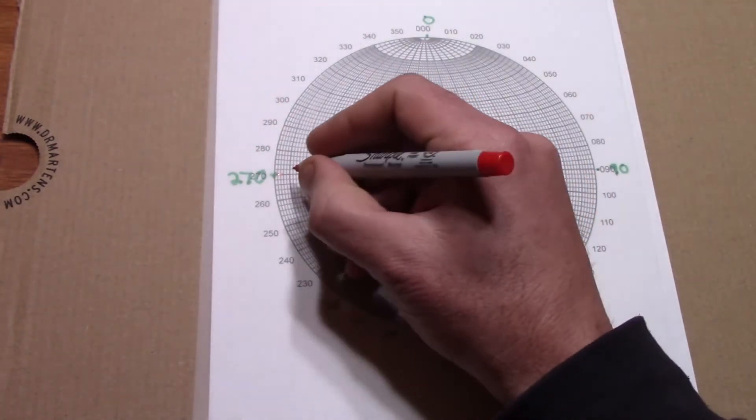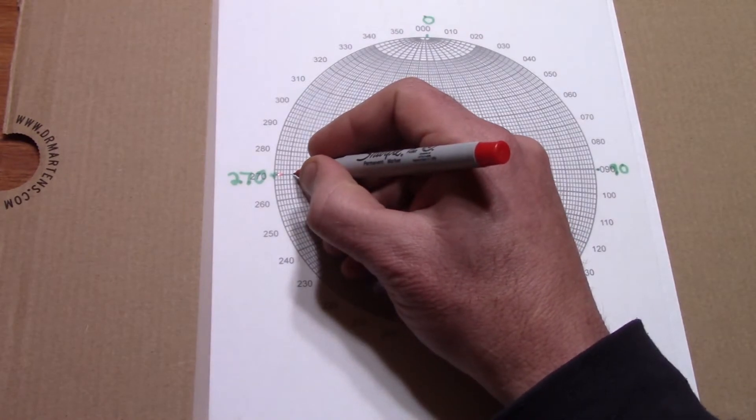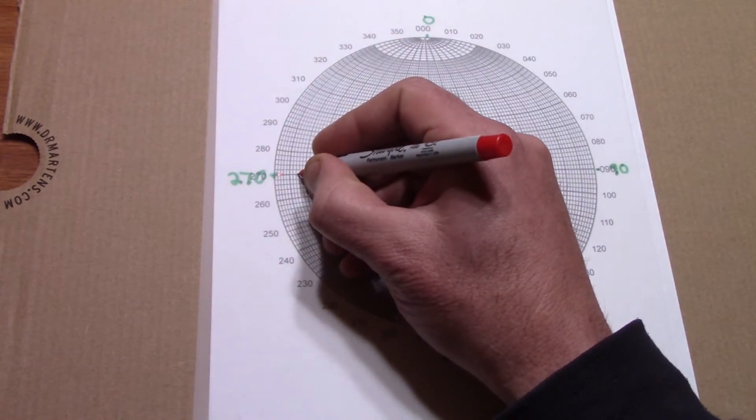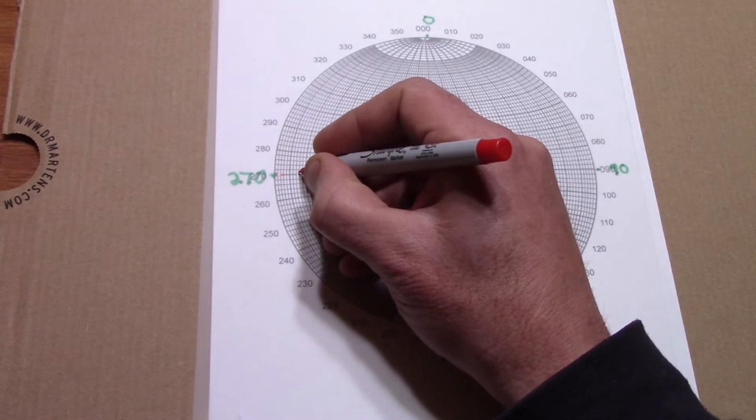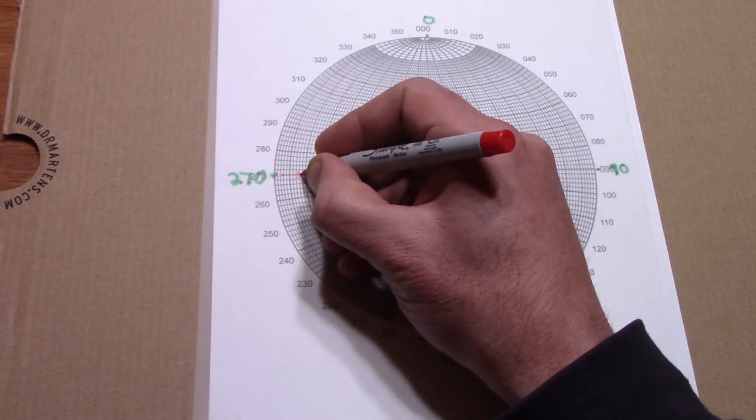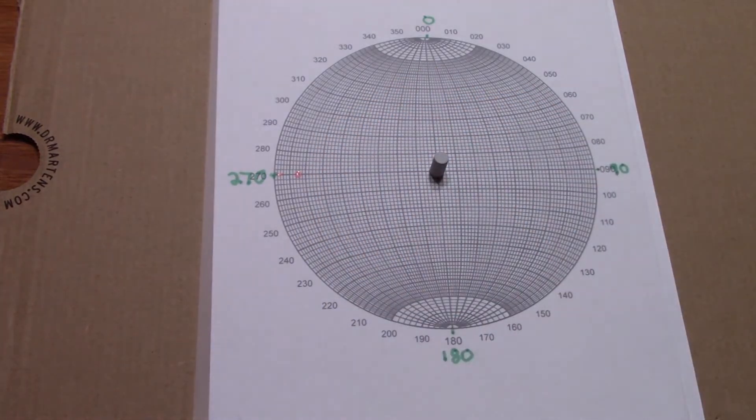You just count in along this east-west equator, in this case 15 degrees, and make a point. Rotate back to proper orientation, and here is the plotted point for the lineation.